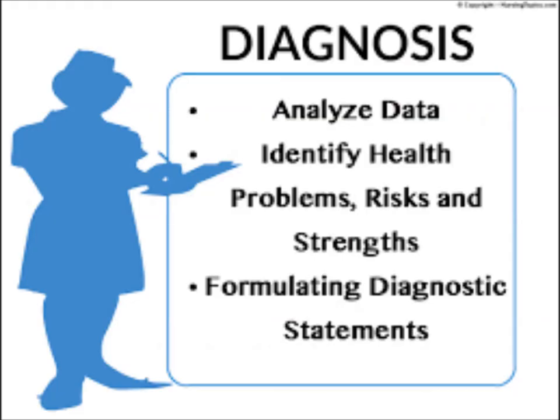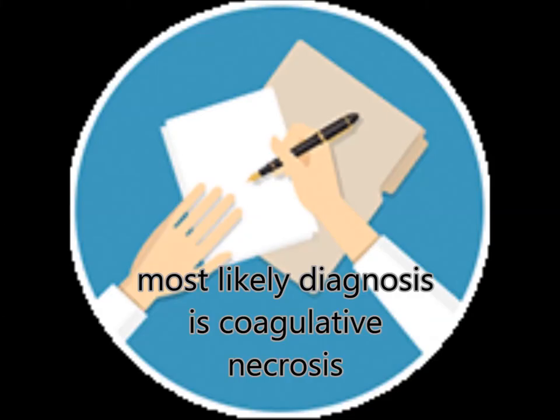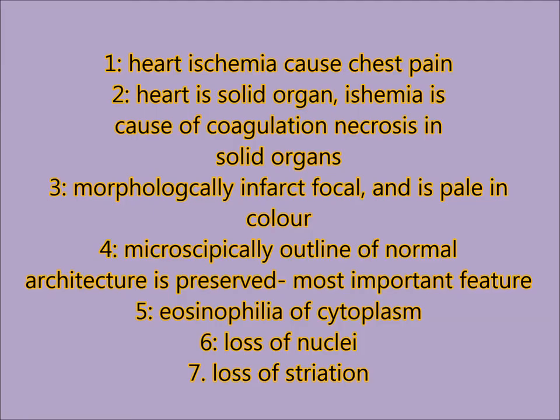Regarding diagnosis: in a skill lab or OSCE, always analyze the data given in the scenario, identify the cause and the problem, then give a provisional diagnosis. In this case, given the gross and microscopic images, the most likely diagnosis is coagulative necrosis. The cause is ischemia.